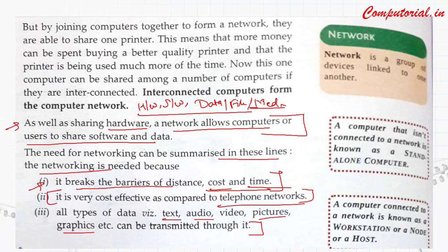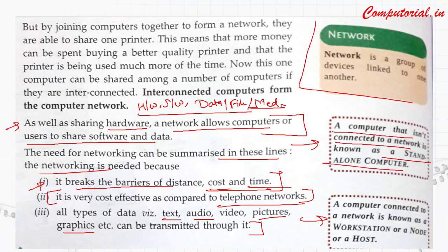Here we have two important notes. First: a computer that isn't connected to a network is known as a stand-alone computer. If no computer network is connected to that computer, we call that a stand-alone computer. For example, suppose I bought a new PC and I am not using internet, neither am I connecting my PC to any local area network. In that case, that computer can be termed as my stand-alone machine.